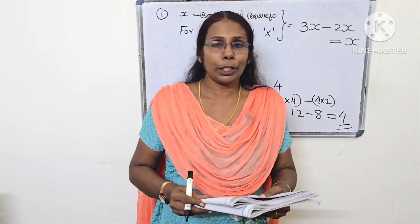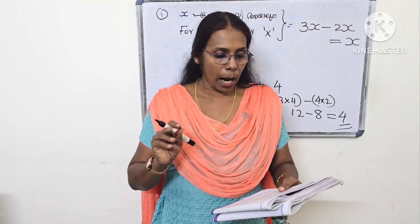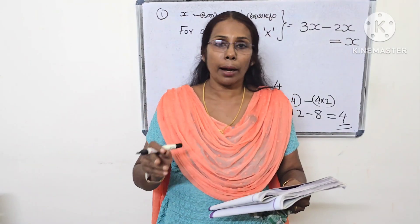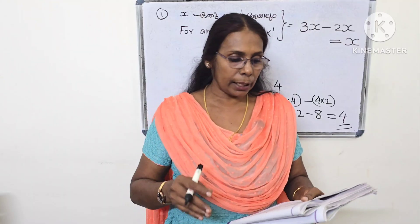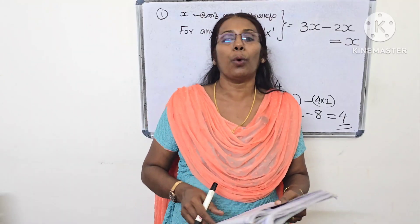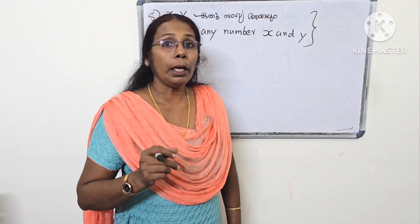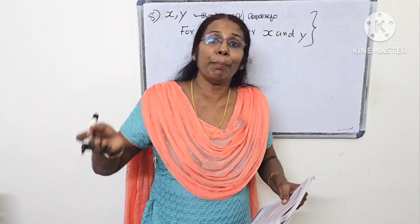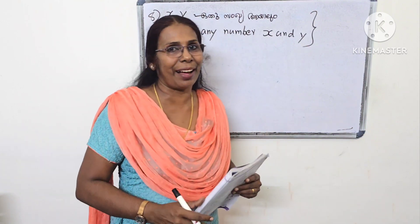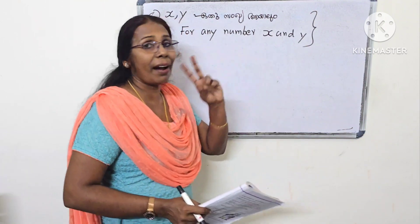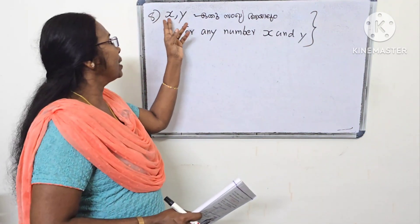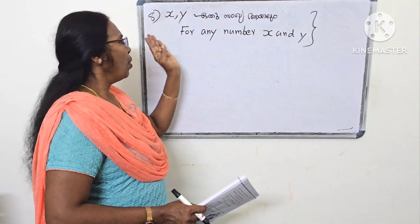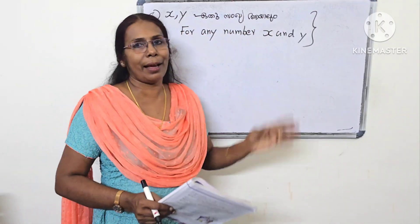A number added to a number and then the added number subtracted gives the original number. For any number x and y, we have two variables here.